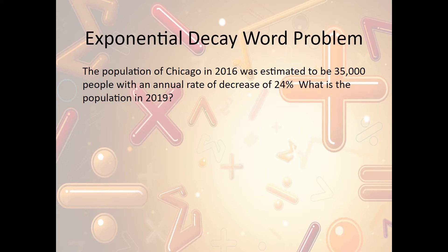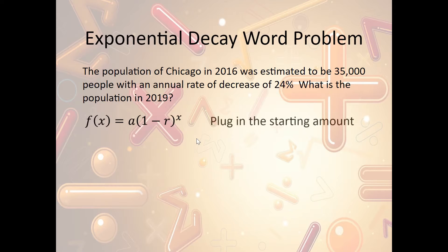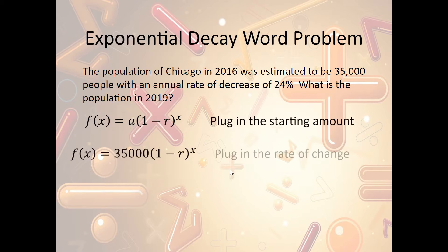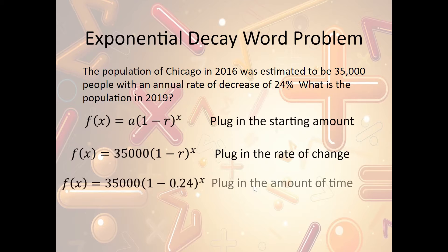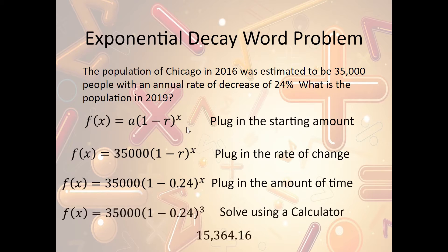Now let's look at exponential decay. The population in Chicago was decreasing by 24%. We use a · (1 − r)ˣ — it's minus because we're decreasing. Starting amount a is 35,000; rate r is 24% or 0.24; time x is 3 years from 2016 to 2019. Solving with a calculator gives us 15,364.16 people.